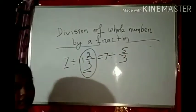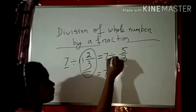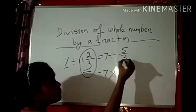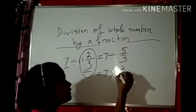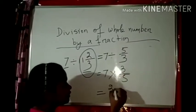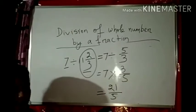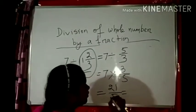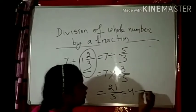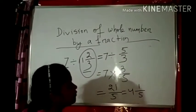Now divide: 7 into the reciprocal of 5 by 3, which is 3 by 5. So 7 times 3 equals 21 by 5. This is an improper fraction, so convert to a mixed number: 5 fours are 20, remainder 1 — giving 4 and 1 by 5. That is the answer.